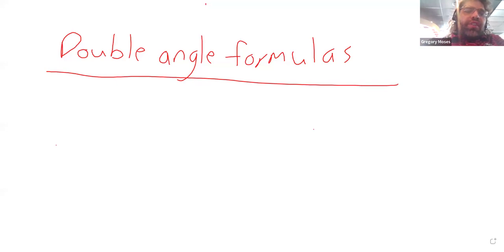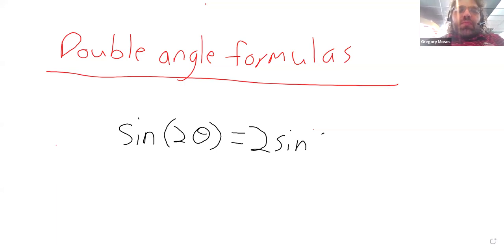So one of them is for the sine of two times theta. The sine of two times theta is twice the sine of theta times the cosine of theta. And I'm not going to make you memorize any identities other than the Pythagorean identity. I will say this is a pretty famous identity that might be worth remembering.